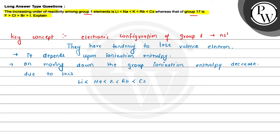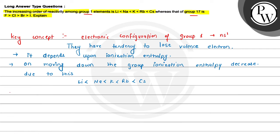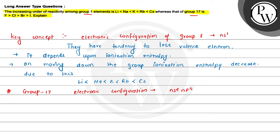Now we will talk about group 17 elements. Group 17 has the electronic configuration NS2 NP5. That means if it gains one electron, its octet will be complete. So the reactivity of group 17 depends on accepting one electron.